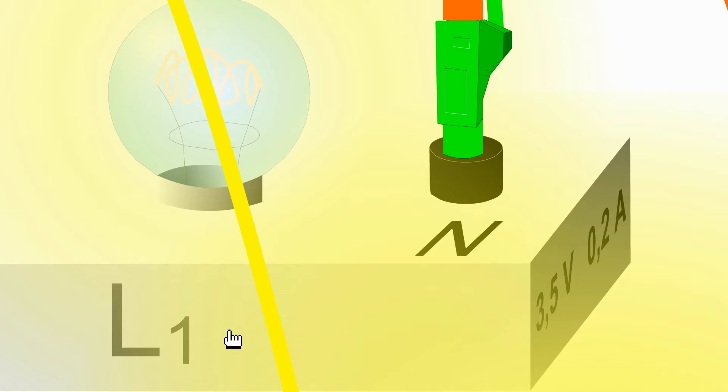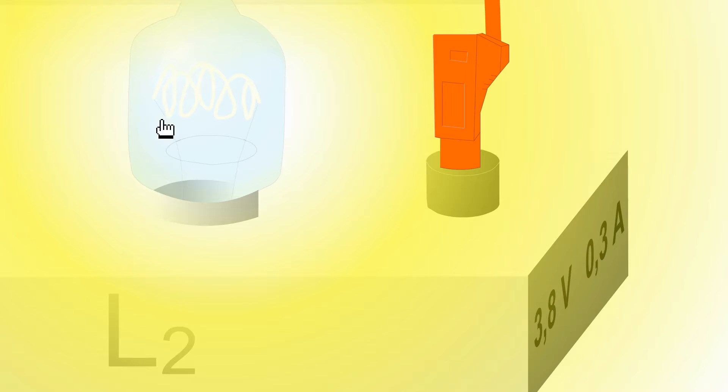The L1 bulb has a nominal voltage of 3.5 volts. It would then be crossed by a current of 0.2 amperes. The L2 bulb is intended by its manufacturer to be supplied with 3.8 volts and would then be crossed by a current of 0.3 amps.